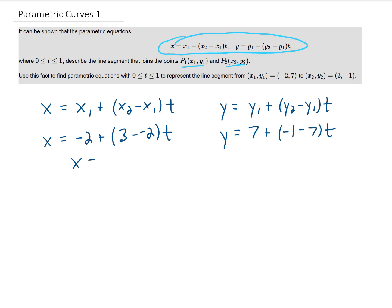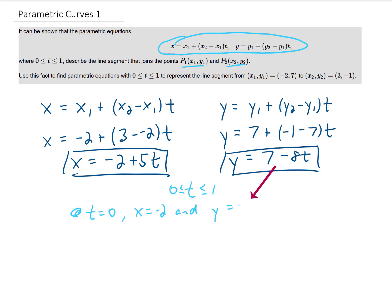Simplifying gives us our parametric curve, and what we're saying here is that our t value goes from 0 to 1. What you'll notice is this, at t equals 0, our x value becomes negative 2, and our y value becomes 7. That is the initial point that we were given up here.